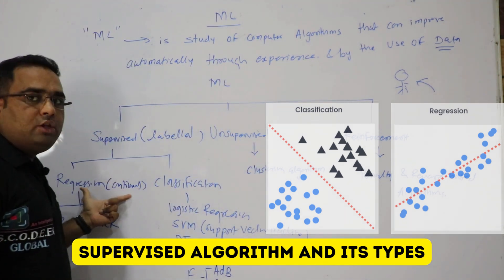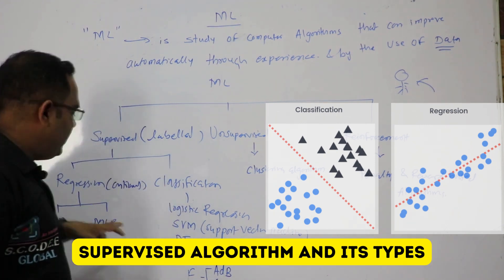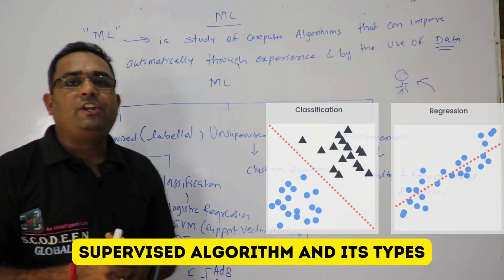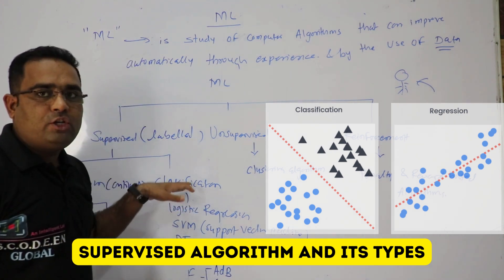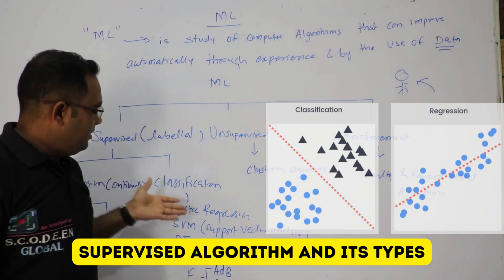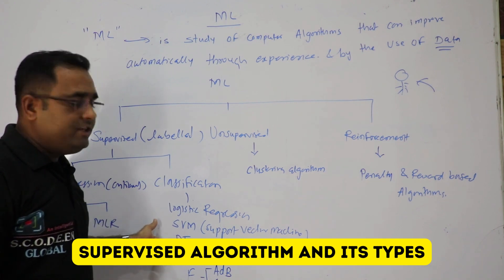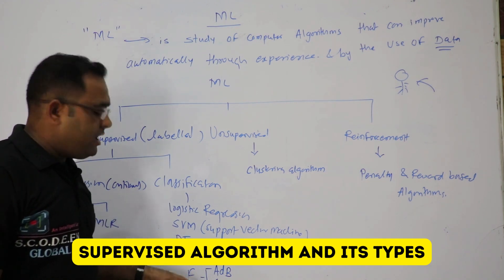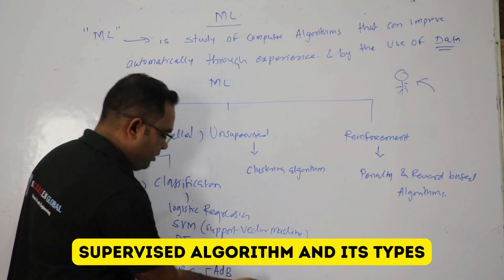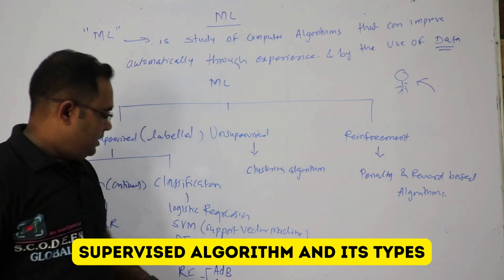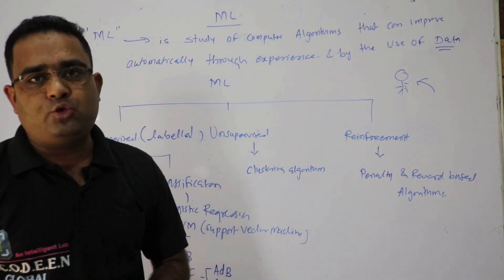In regression algorithm, we have two types: simple linear regression and multi linear regression. In classification, we have logistic regression, SVM, decision tree, Naive Bayes, and random forest. Under random forest, we have AdaBoost, gradient boosting, and XGBoost.